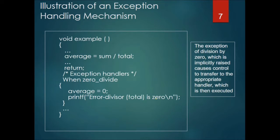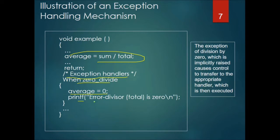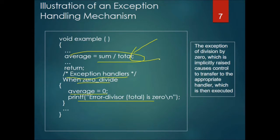Here is an illustration of an exception handling mechanism. If a divide-by-zero occurs, the average is returned as zero and we print an error message that the divisor — the total — is zero. When total comes to zero, we cannot divide, as dividing by zero is infinite, so we must inform the user that the total is zero and some action is needed. The division-by-zero exception is implicitly raised, causing control to transfer to the appropriate handler, which is then executed — whether that is the next statement, a function call, or something else.